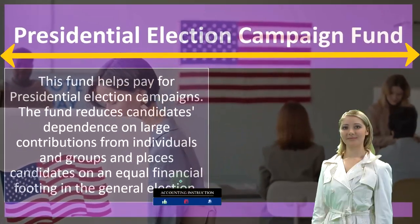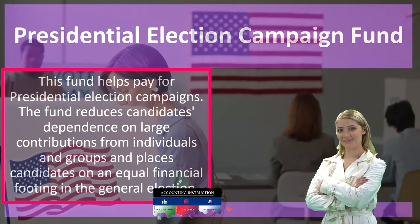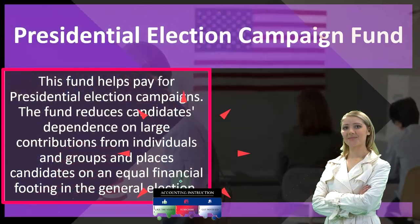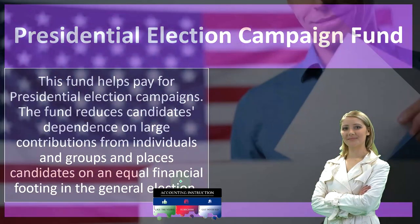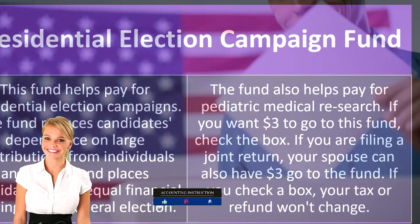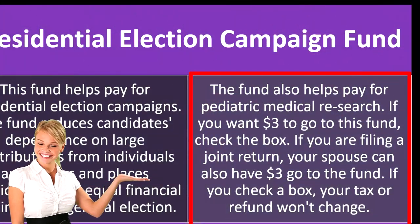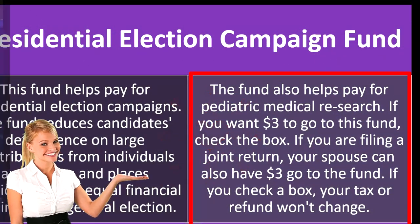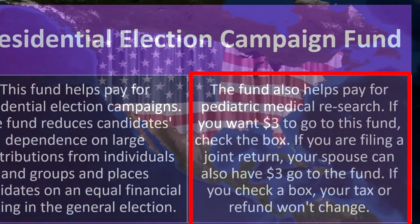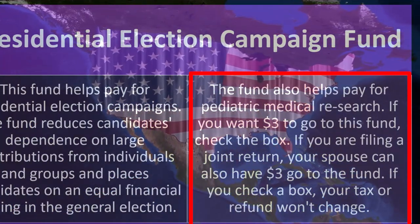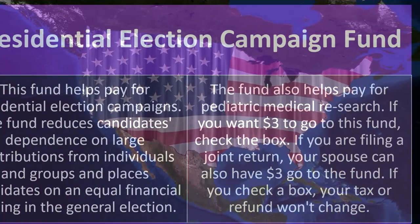This fund helps pay for presidential election campaigns. The fund reduces candidates' dependence on large contributions from individuals and groups and places candidates on an equal financial footing in the general election. The fund also helps pay for pediatric medical research. So if you want $3 to go to this fund, check the box. If you're filing a joint return, your spouse can also have $3 go to the fund. If you check a box, your tax or refund won't change.